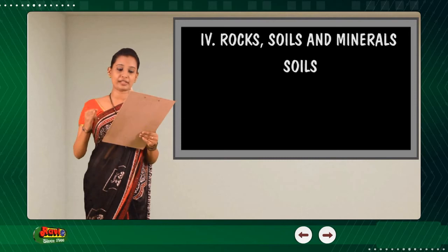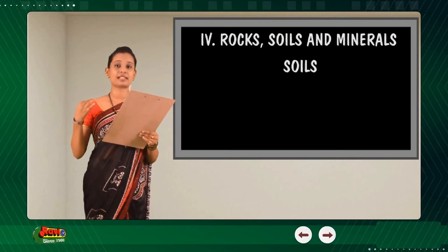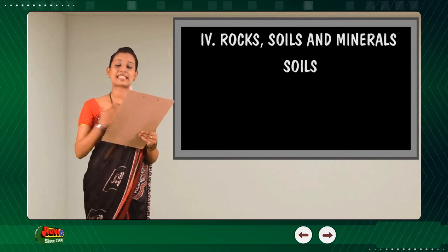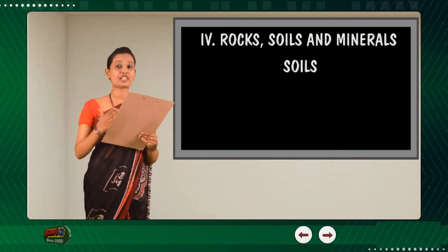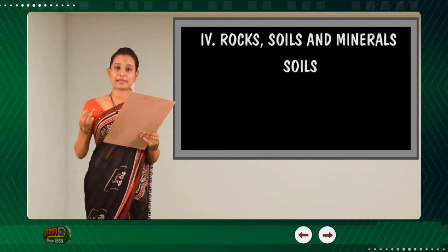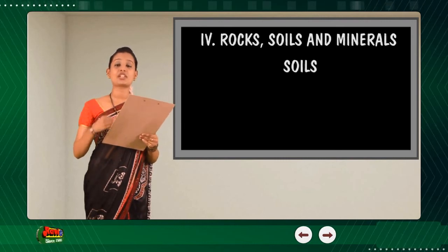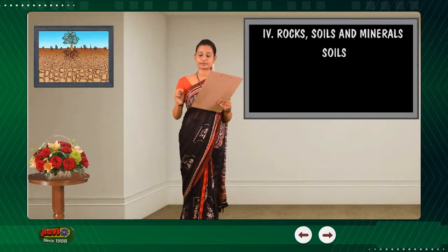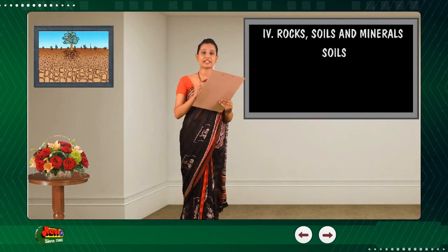Soil is a mixture of minerals, organic matter, gases, liquids and organisms. It is a natural body that supports as a medium for plant growth. It is a means of water storage, supply and purification, and also it is a modifier of the atmosphere of earth. A mineral is a naturally occurring substance that is solid and inorganic, and it is different from a rock, which can be an aggregate of minerals or non-minerals.